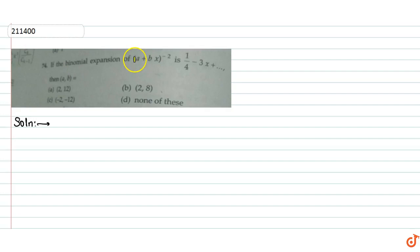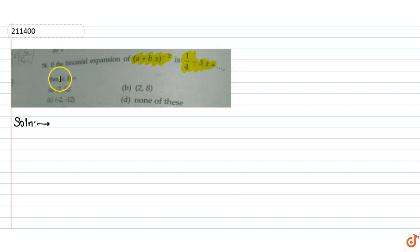If the binomial expansion of (a + bx)^(-2) is 1/4 minus 3x plus ..., then we have to find the value of a and b.